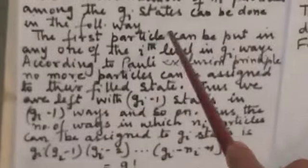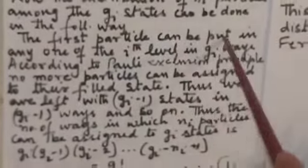Now the distribution of NI particles among the GI states can be done in the following way. The first particle can be put in any one of the ith level in GI ways. According to Pauli exclusion principle, no more particles can be assigned to their filled state. Thus we are left with GI minus 1 states in GI minus 1 ways and so on. Thus the number of ways NI particles can be assigned to GI states: GI, GI minus 1, GI minus 2 and GI minus NI plus 1.